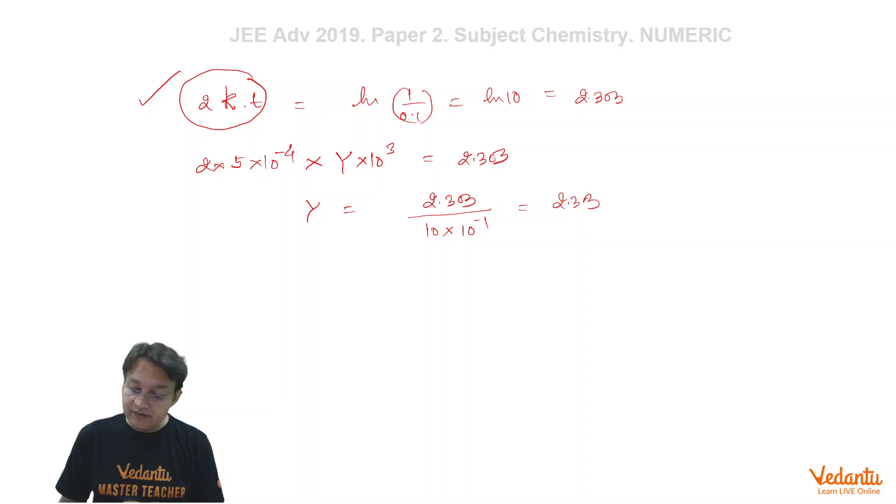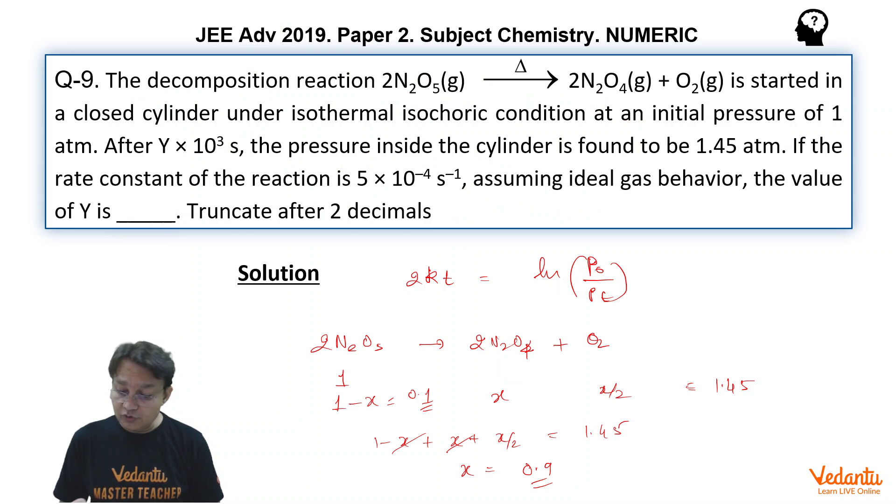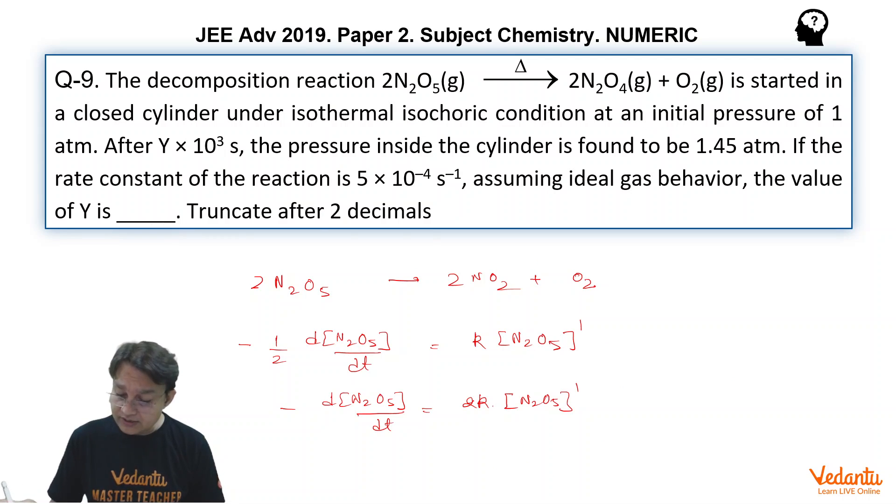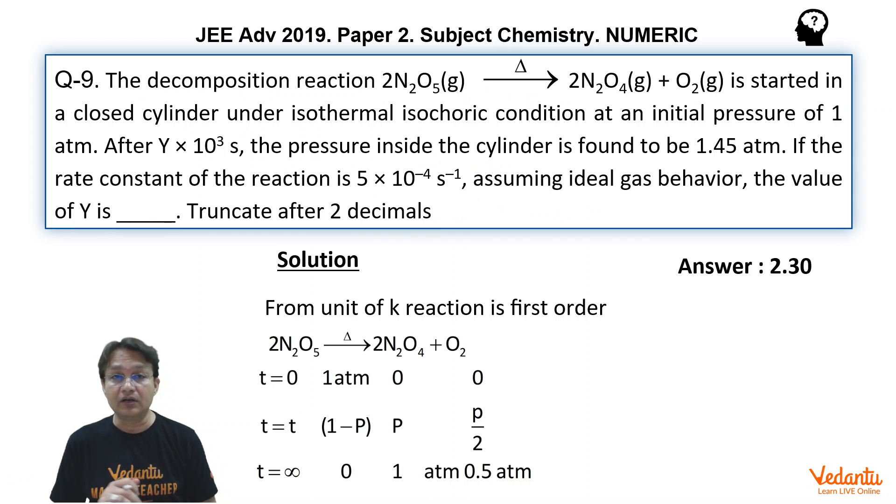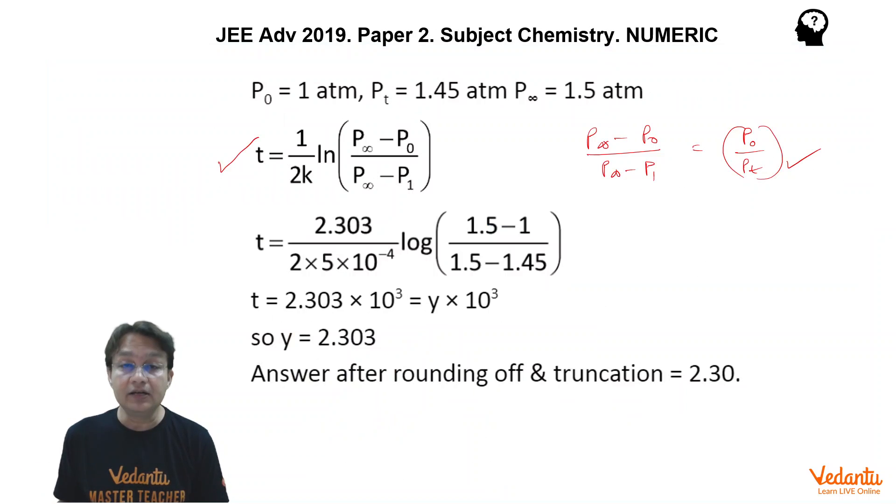So henceforth, because generally students before this examination used to ignore or they are double-minded whether JEE is going to ask questions like this, and whether JEE is going to ask a question in which there is a coefficient 2, so whether to take this approach or not. So this is the perfect way of solving the problem. And in fact, that was very much on the cards because in many previous examinations, that integrated expression was not taken as 2k. But this time, definitely 2k is needed. So once again, I tell you the important feature of this is that the integrated rate law for this equals 2kt equals ln(P₀/Pt).